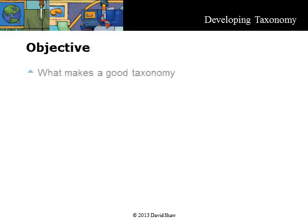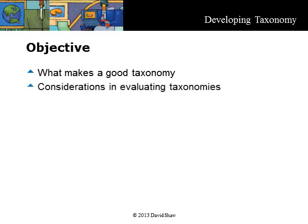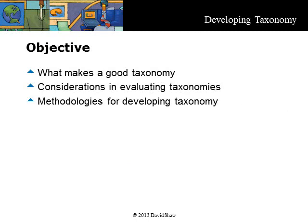In part two we finished with understanding the business needs and making a build or buy decision based on criteria such as: Does a standard already exist? Can we use it as is? Can we adapt it? Or should we develop our own? In this part three we will explore what makes a good taxonomy, considerations in evaluating taxonomies, and the methodologies for developing one.